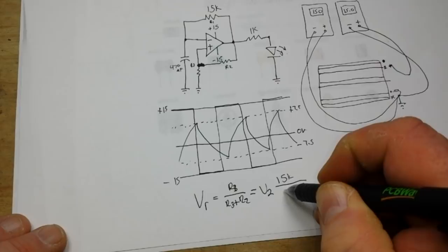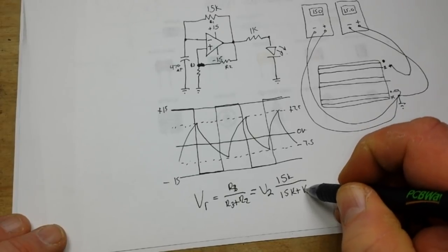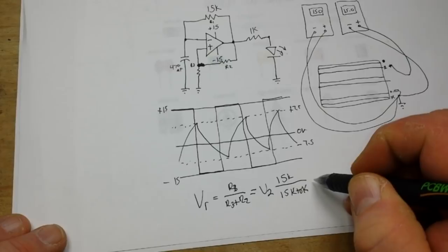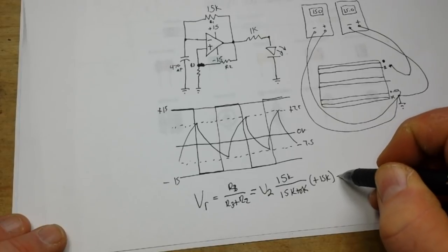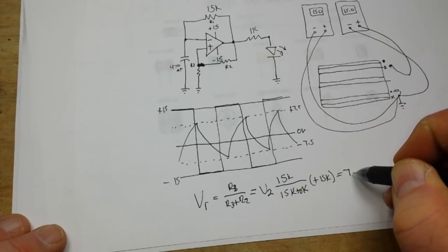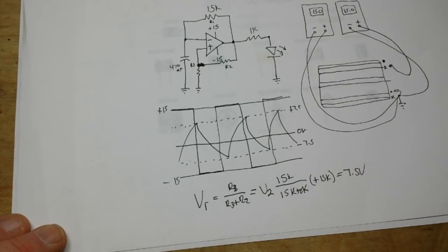Which is 15k over, you with me, what's it going to be? 15k plus what? 15k, which is going to end up equaling 7.5 volts. Pretty simple. Should we take a look at it in action?